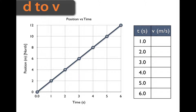Let's choose the very first point on our table. That gives us a rise of 2 meters and a run of 1 second. Rise over run gives us 2 meters per second, which is our velocity.